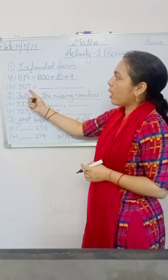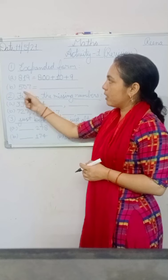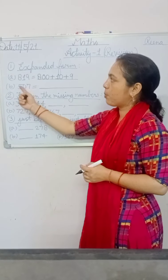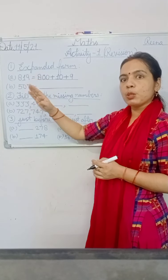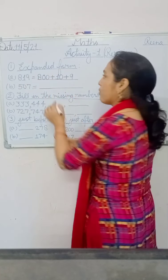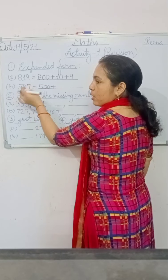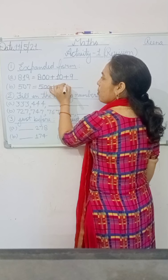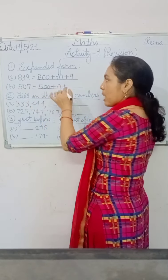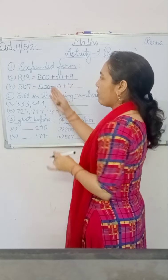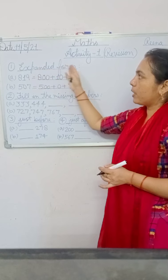Now in part B, you have been given five hundred seven — 507. In this number, seven is in ones place, zero is in tens place, and five is in hundreds place. So five hundreds is 500. Plus zero is in tens place — zero tens is zero. Plus seven is in ones place — seven ones is seven. So write here: 500 + 0 + 7. This is your expanded form question.